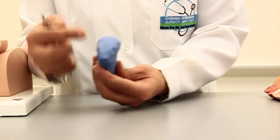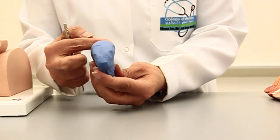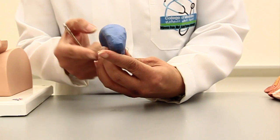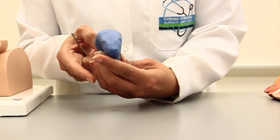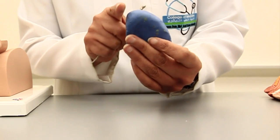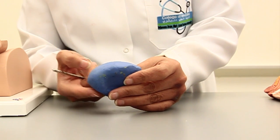So we have a superior surface which is also known as the fundus, two inferolateral surfaces, and a posterior surface which is also known as the base of the bladder.